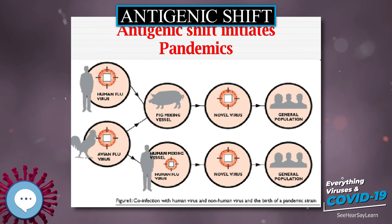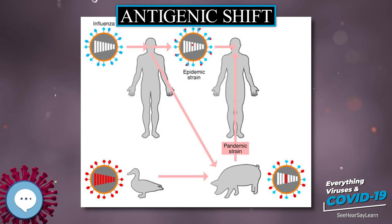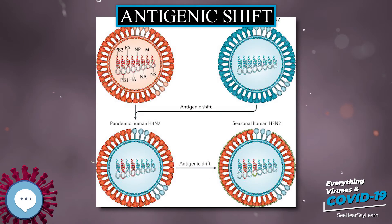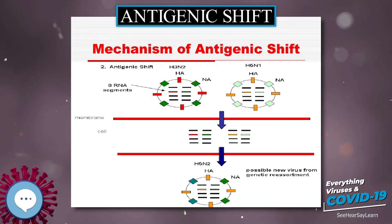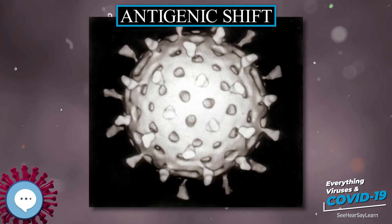Antigenic shift, however, occurs only in influenza A because it infects more than just humans. Affected species include other mammals and birds, giving influenza A the opportunity for a major reorganization of surface antigens. Influenza B and C principally infect humans, minimizing the chance that a reassortment will change its phenotype drastically.